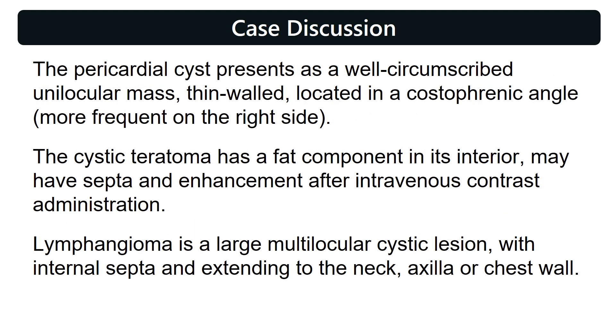The pericardial cyst presents as a well-circumscribed unilocular mass, thin-walled, located in a costophrenic angle, more frequent on the right side.